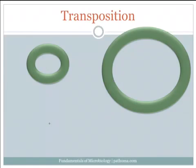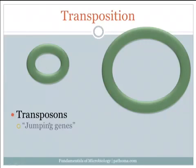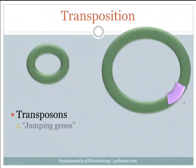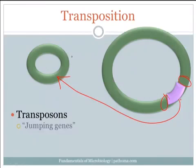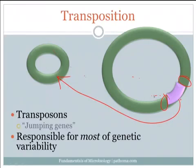The next way that bacteria can increase their genetic variation is through transposition, accomplished through transposons, which are jumping genes. They jump either from one segment of a plasmid to another, or even from a plasmid to a chromosome, or a chromosome back to a plasmid. While they're on the chromosome, they may pick up some flanking chromosomal genes before they jump back to the plasmid. Since bacteria can share plasmids with each other, this bacterium could deliver these flanking chromosomal genes to another bacterium. This process of transposition is responsible for most of the genetic variability among bacteria.